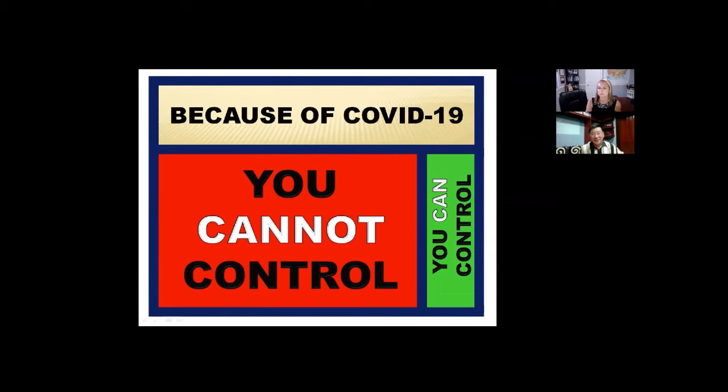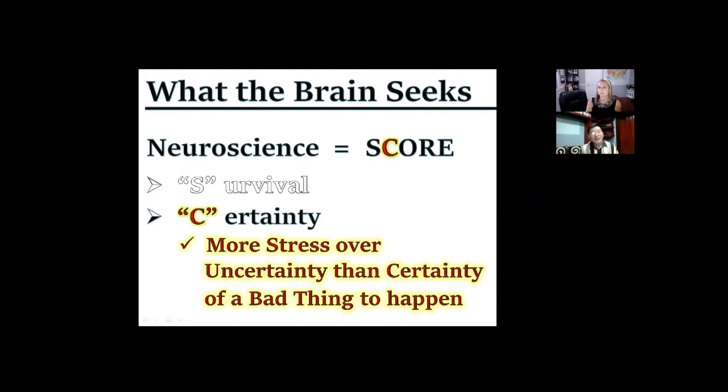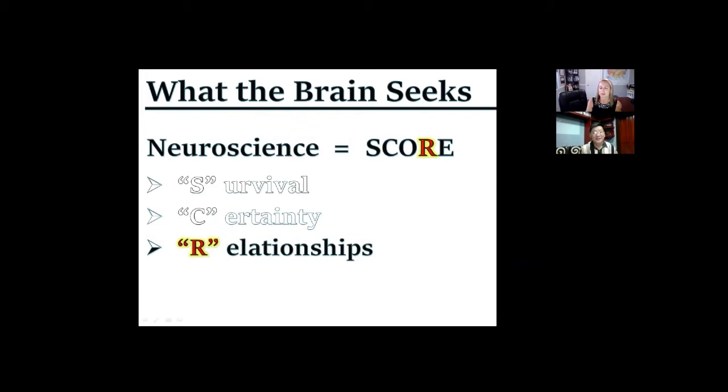Prior to COVID, there's a portion we can control and a portion we cannot control. When COVID started, 99% of everything we cannot control anymore. We experience more stress over uncertainty than with the certainty of something bad going to happen.